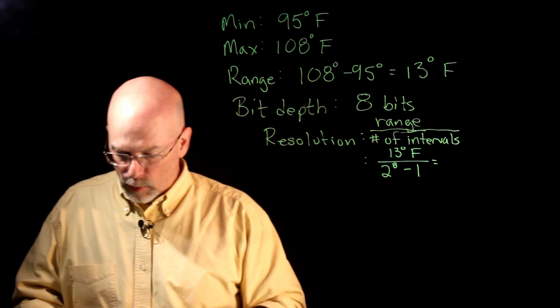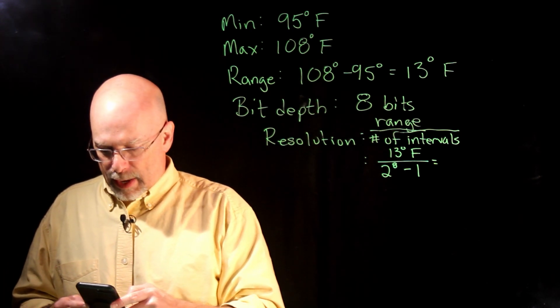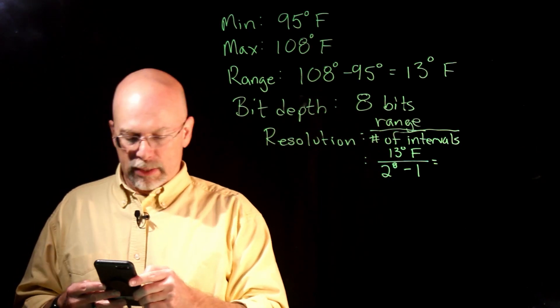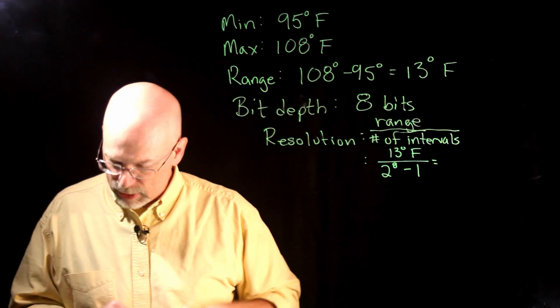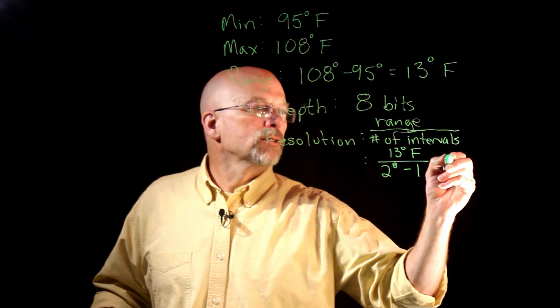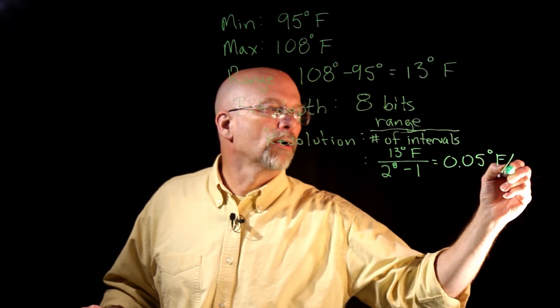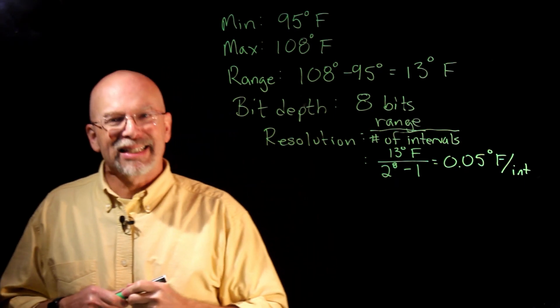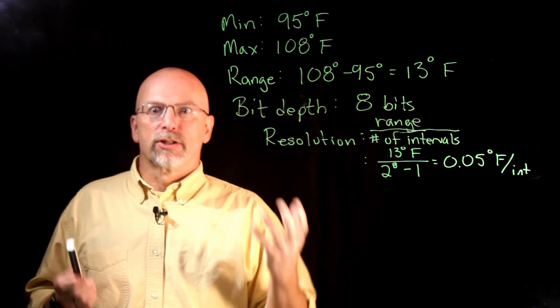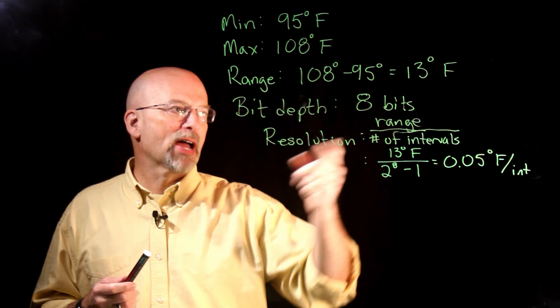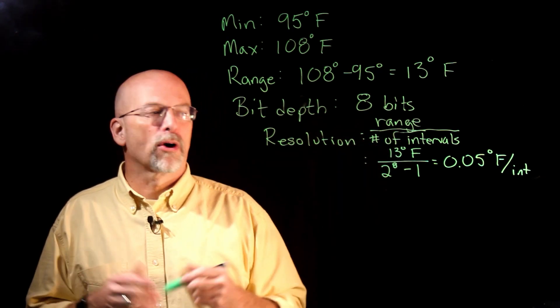Let's take out our calculator here. We've got 13 degrees divided by 255, which is going to give us about 0.05 degrees Fahrenheit per interval. That's pretty accurate. We could have actually done with half the number of bits that we've got there. But that's a good resolution for our thermometer.